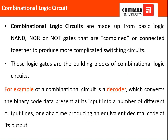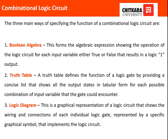Combinational logic circuits are normally made up from logic gates — NAND, NOR, and NOT gates — combined to produce complicated switching circuits. These logic gates are the building blocks of combinational logic circuits. For example, a decoder circuit is used to decode binary data into decimal data. There are three ways to represent a combinational logic circuit: Boolean algebra, truth table, and logic diagrams.